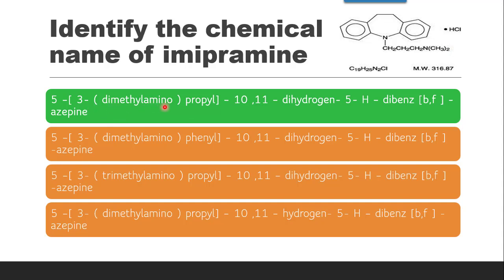In the answer you can see it is dimethylamino at the third position of the propyl — CH₂, CH₂, CH₂. Then 10,11-dihydro: at the tenth and eleventh positions there would be an unsaturation, but here it is saturated. Then 5H — at the fifth position, hydrogen is replaced by the propyl. Then dibenz[B,F] — labeling from A through F around the ring, B and F are the sites where the benzene rings are attached to the azepine. So it is BF-azepine. The correct option is the first option.